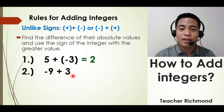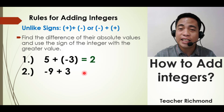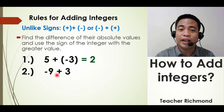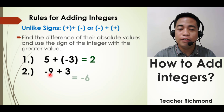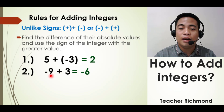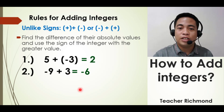Next example: negative 9 plus positive 3. Get the difference between 9 and 3, which is 6. The greater value is 9 and it is negative, so the sign of the answer is negative. Therefore, negative 9 plus positive 3 equals negative 6.